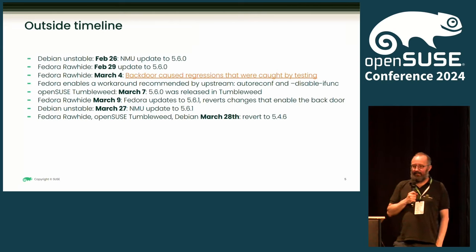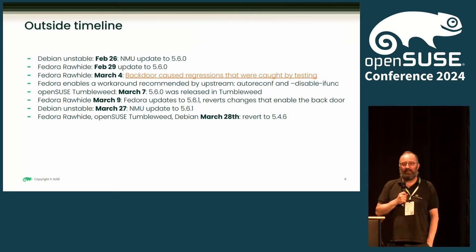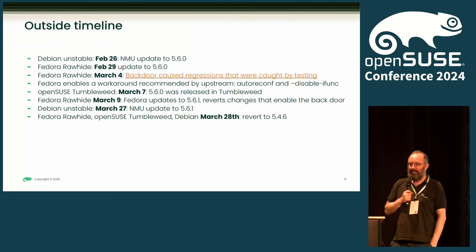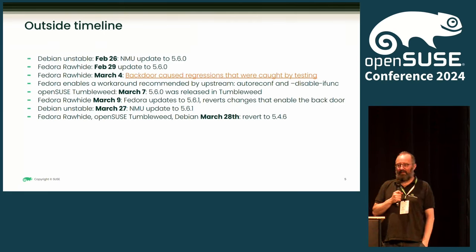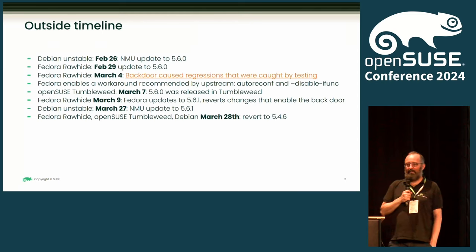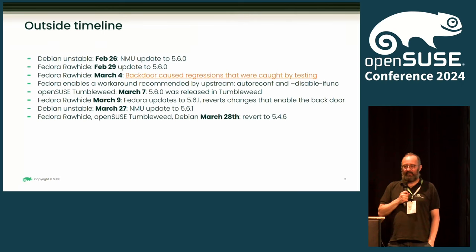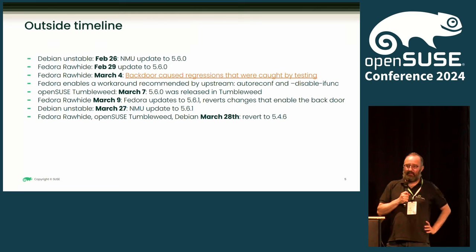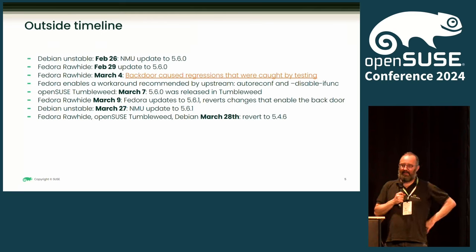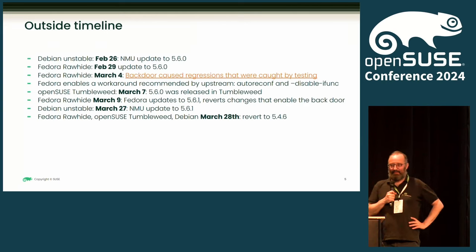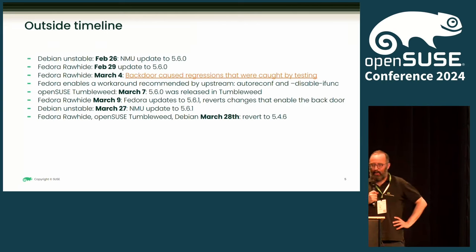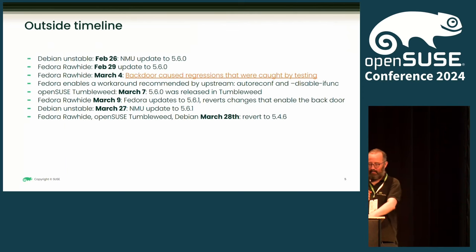Looking at the outside timeline, other distributions like Debian Unstable and Fedora, who follow upstream closely, had also updated to this. Interestingly, Debian had a known-maintainer update (NMU), and it turned out the original 5.6.0 or 5.6.1 was triggered by one of the attackers, as it turned out. Interestingly, Fedora also saw regressions from 5.6.0. The upstream author worked with them to disable the functionality temporarily and release 5.6.1, which turned out to fix the backdoor. We all reverted back to the 5.4.6 version on March 28th.